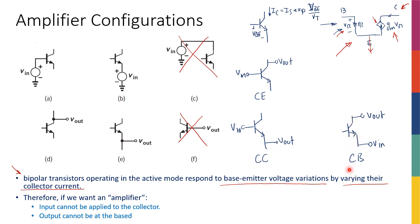There is also an important variation called common emitter with degeneration, which is significant enough to be discussed separately from the basic common emitter. Today's lecture will cover common emitter and common emitter with degeneration, and next week will cover common collector and common base amplifiers.